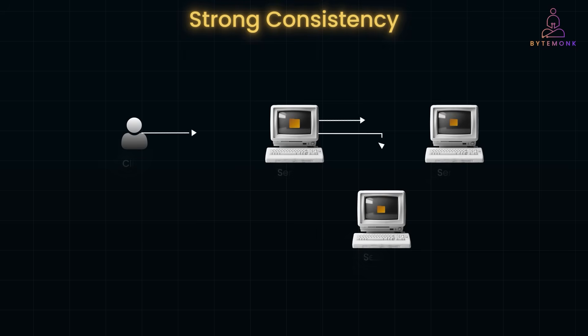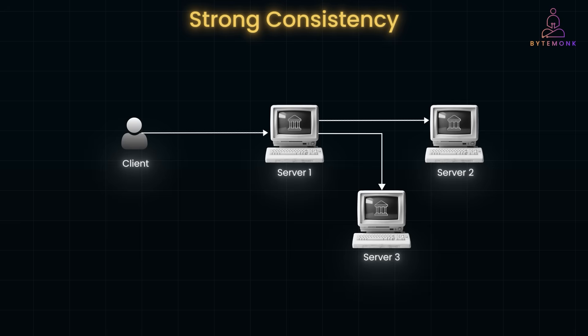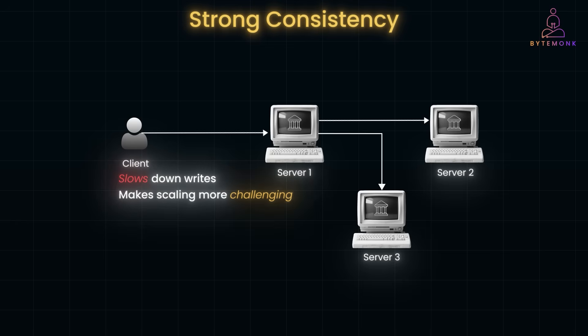In a strongly consistent system, every read operation always returns the most recent write. As soon as a file is updated, all users — no matter where they are — see the latest version instantly. For example, in a banking system where you transfer money, you wouldn't want to check your balance and still see the old amount. Strong consistency ensures your updated balance is immediately visible across all systems. However, this model slows down writes because the system must confirm all replicas have been updated before allowing new reads, and it makes scaling more challenging across multiple data centers.